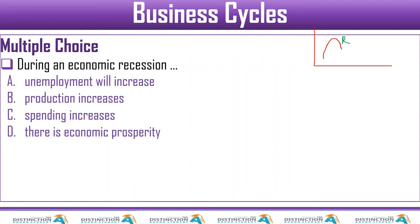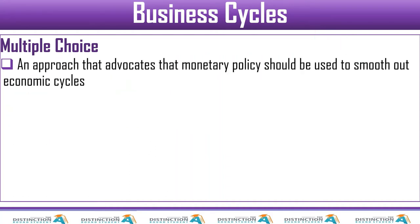Question seven: during an economic recession, what happens? People are losing jobs, businesses are closing, companies are retrenching. Your answer is something bad. Economic prosperity — doesn't make sense. Spending increases — how can spending increase when people are losing jobs? Production increases — no. Obviously unemployment will increase. People are losing their jobs during a recession.